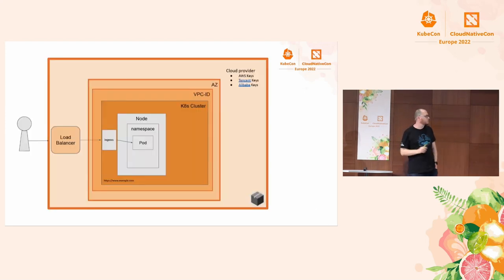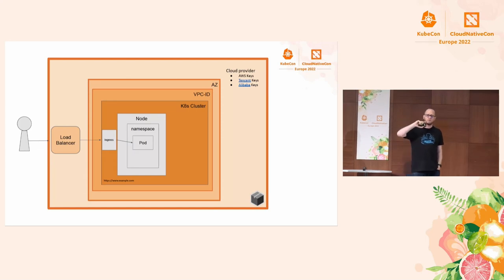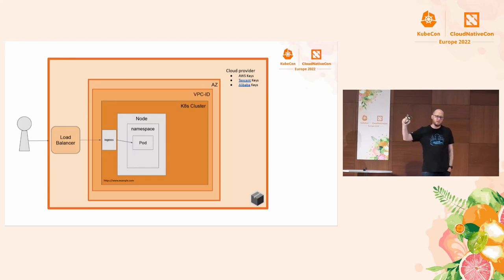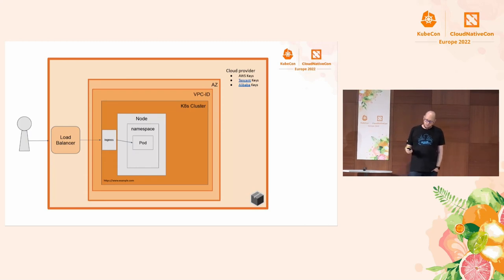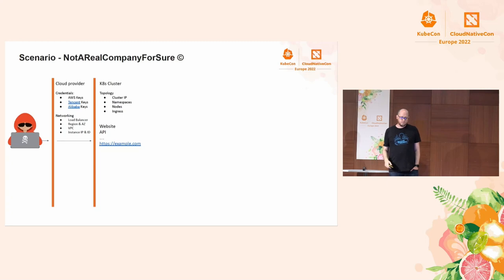We are starting to have a lot of information and building the most important thing — the attack route. We know that behind example.com/api/whatever, it goes to an ingress, that ingress goes to a service, and the service goes to a pod. We can do this with different API endpoints. We also have information about nodes and even namespaces, and keep adding new things to our map.